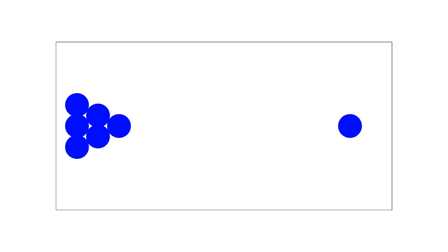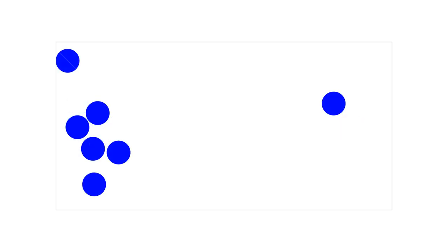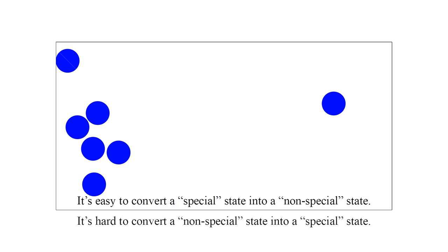The situation for the reverse process appears very different. For the unperturbed case, the system ends up in a distinctly special state. Six of the balls end up at rest in a nicely racked arrangement, and all kinetic energy is transferred to the single remaining ball. For the perturbed case, we do not end up with such a special state. We conclude that it is easy to convert a special state into a non-special state, but it is hard to convert a non-special state into a special state.